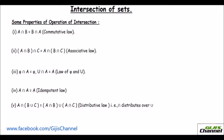The first property says intersection is commutative. That is, A intersection B is equal to B intersection A. That is the commutative law. And A intersection B intersection C is equal to A intersection B intersection C — this is the associative law. The third law says an empty set intersection set A is empty, and universal set intersection set A will be A.